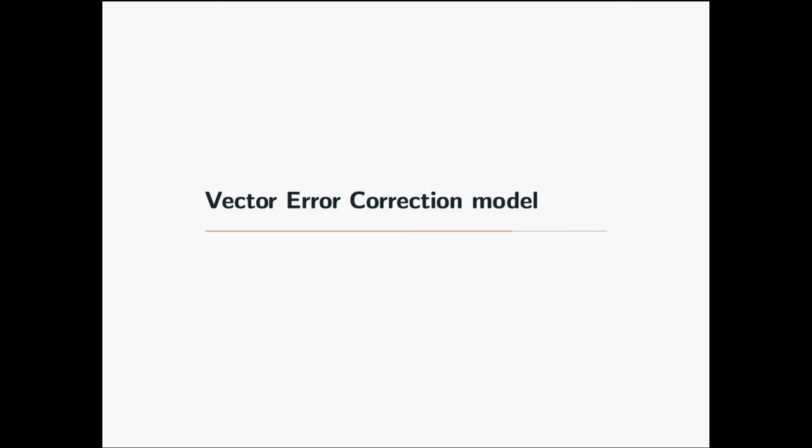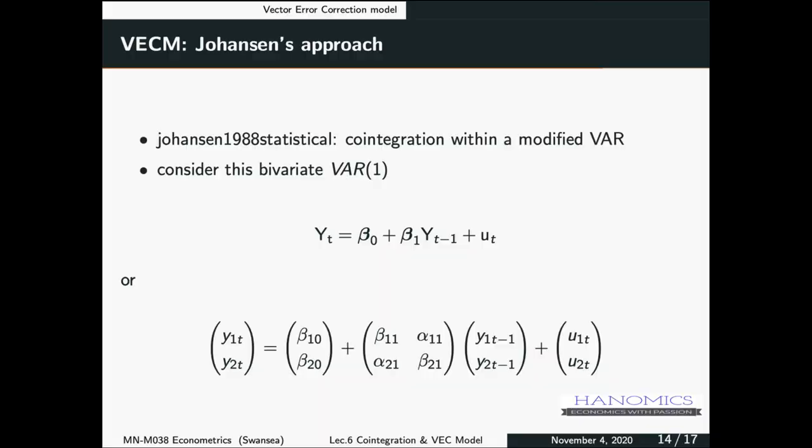What we looked at was one Y(t). What if we could have a representation similar to VAR where we have more than one variable? We have different equations and each one of these endogenous variables will come once on the left-hand side. This is what we call the Vector Error Correction Model, developed by Johansen in 1988. He demonstrated that cointegration can also be modeled within a modified VAR framework. By construction, this is a bivariate VAR(1) model.